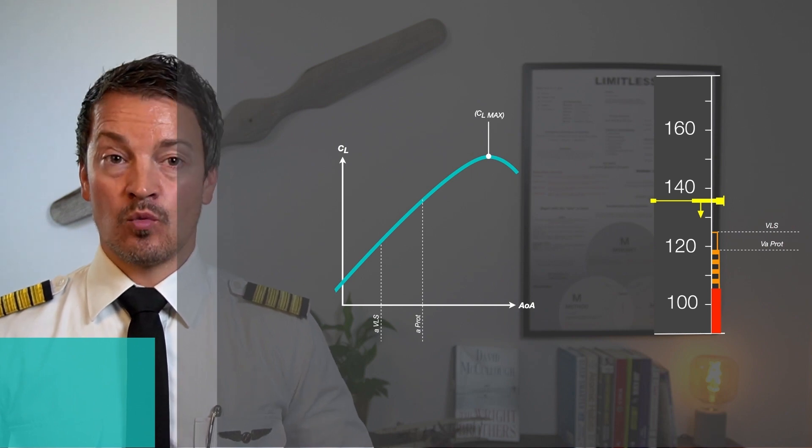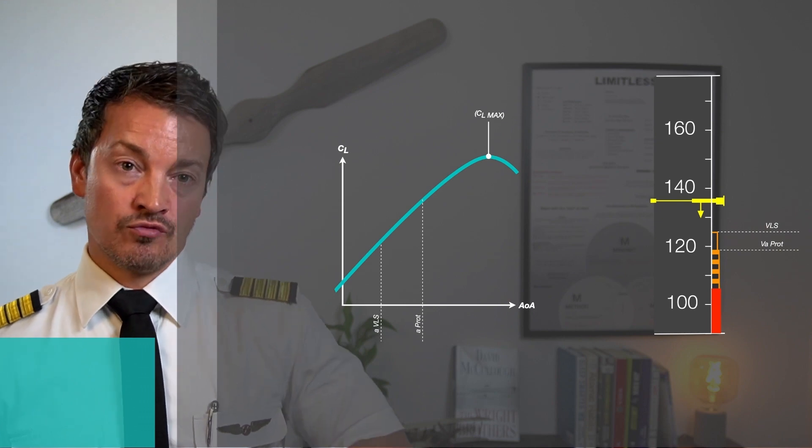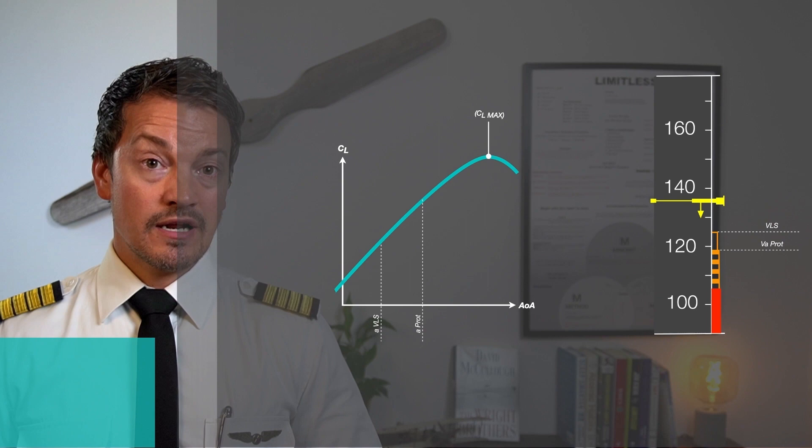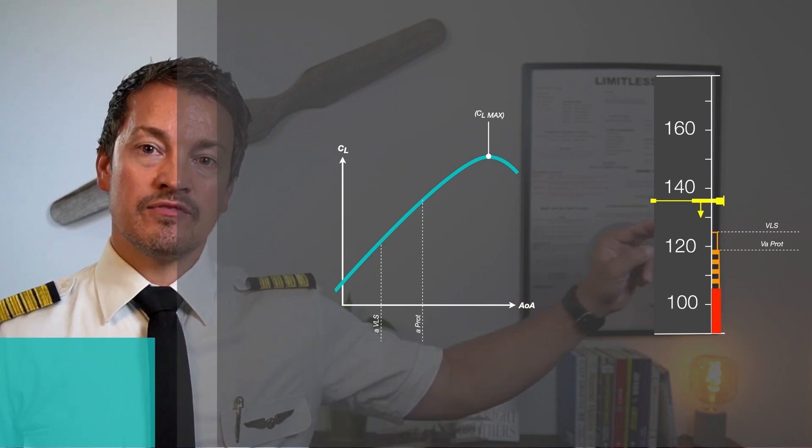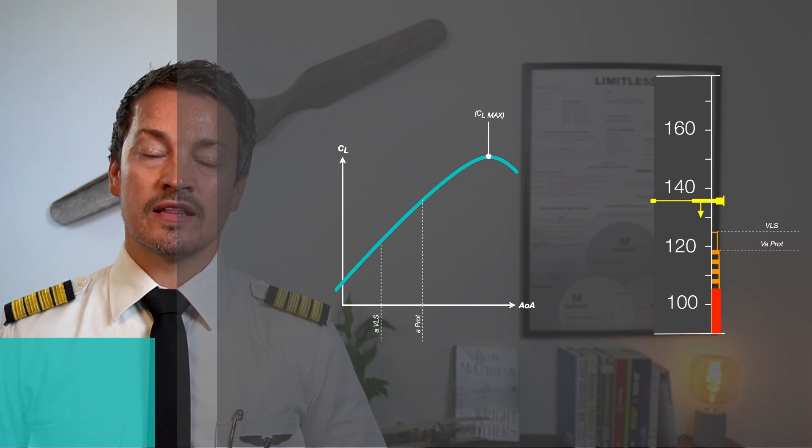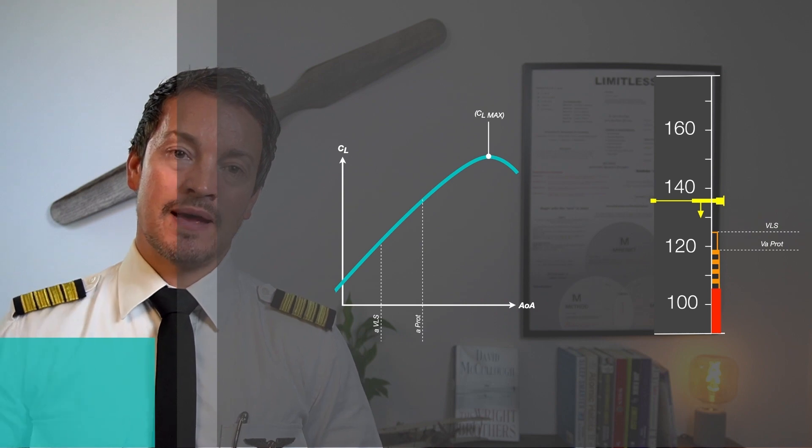so that if I were to have a bank angle, the aircraft will no longer hold the bank on the roll. It will roll wings level, preventing a spin scenario. But other than that, hitting V-alpha prot will not mean anything other than the demand you're giving on the side stick is now an angle of attack demand, not a load factor demand.